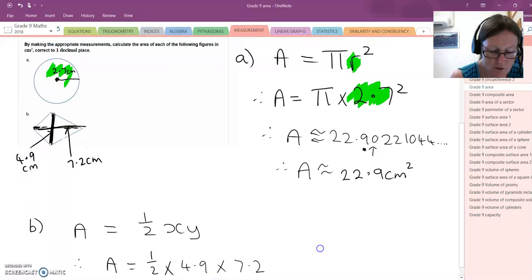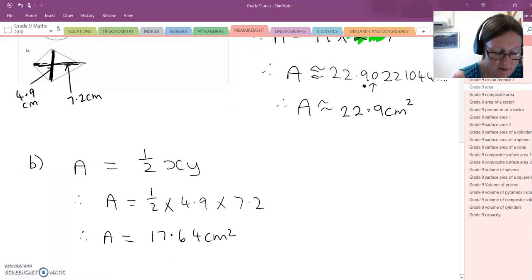If I just go back up to the question, correct to one decimal place. So one decimal place, I look at the second decimal place. It's less than 5, so I leave that first decimal point alone. The area is approximately 17.6 centimetres squared.